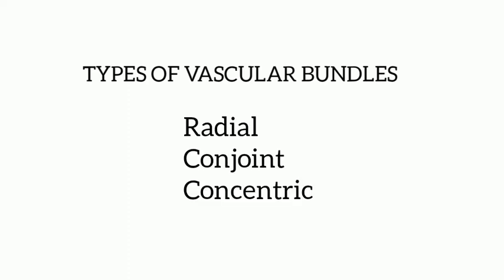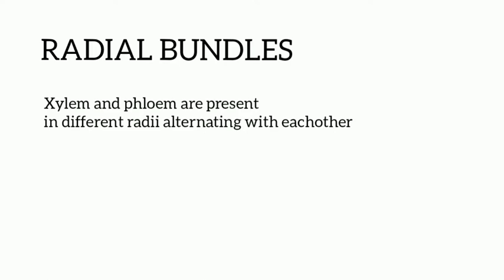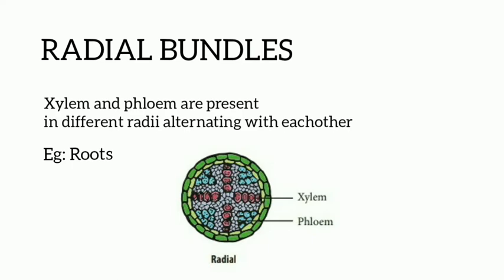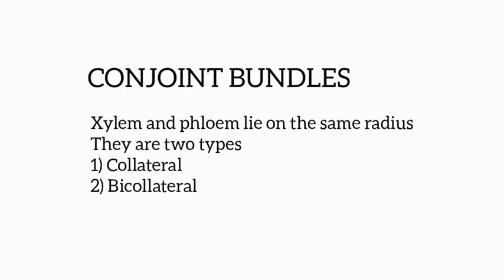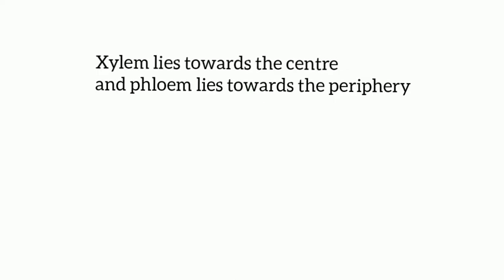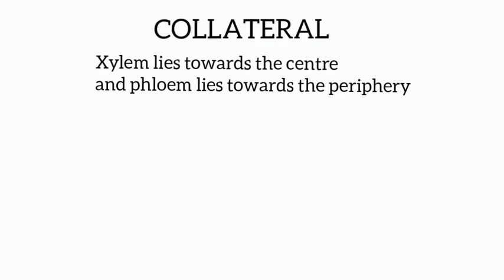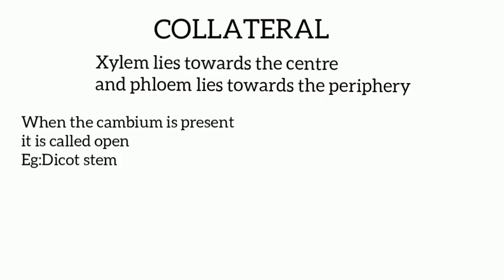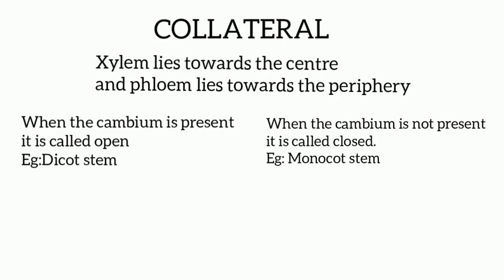There are three types of vascular bundles namely radial, conjoint, and concentric. In radial bundles, the xylem and phloem are present in different radii alternating with each other. You can see this format in roots. Next, we have conjoint bundles, where xylem and phloem lie on the same radius. In conjoint bundles, there are two types: collateral and bi-collateral. When the xylem lies towards the center and phloem lies towards the periphery, you have the collateral type of bundle. In the collateral bundle, when cambium is present, it is called open type and this type is seen in dicot stem. When cambium is not present, it is called closed type and this type is seen in monocot stem.